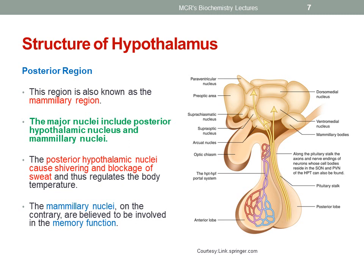The posterior region of the hypothalamus is also known as the mammillary region. The major nuclei include the posterior hypothalamic nucleus and mammillary nuclei. The posterior hypothalamic nuclei causes shivering and blockage of sweat, thus regulating body temperature. The mammillary nuclei, on the contrary, are believed to be involved in the memory function.